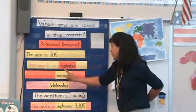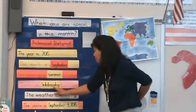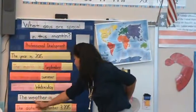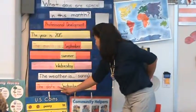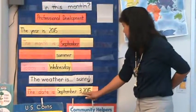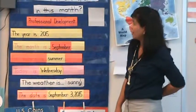The season is summer. Good. Today is Wednesday. All right. The weather is sunny. Good. The date is September 3rd, 2015. All right. There you go.